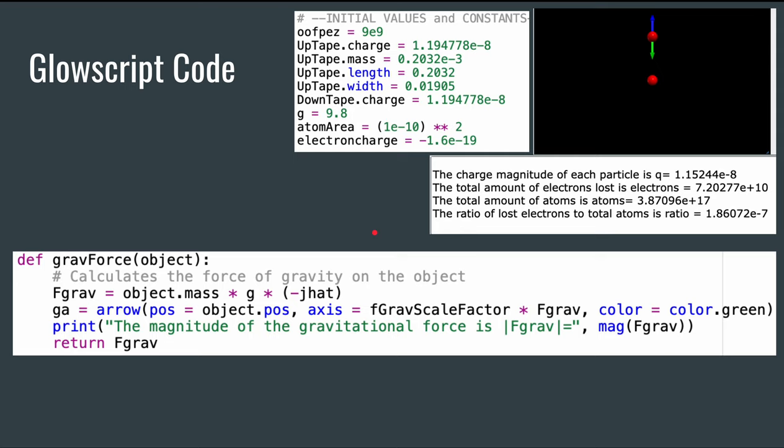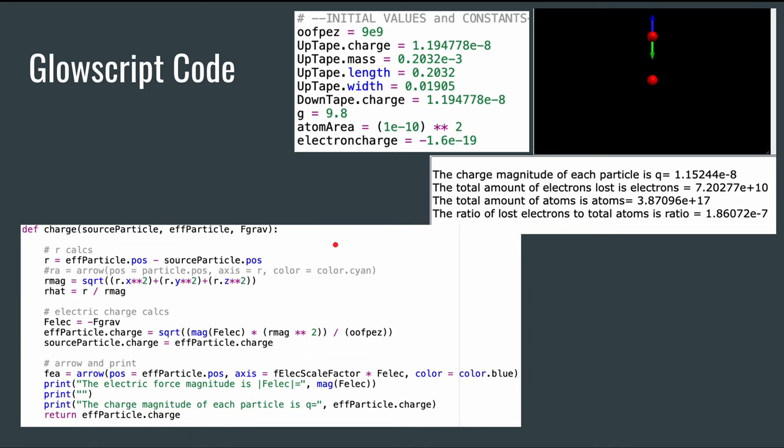So we have our first function here. This function is going to calculate using the gravitational force equation the force of gravity on the tape. And then we can use that force of gravity on the tape in our next function to determine the charge.